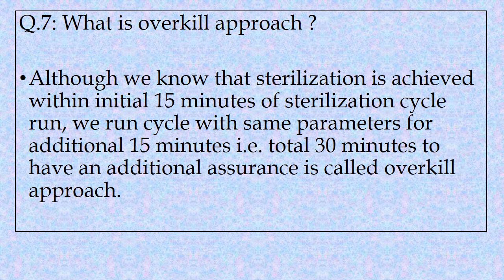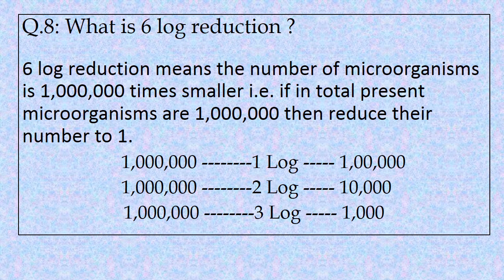Question number seven: What is the overkill approach used in autoclave sterilization? Although sterilization is achieved within the initial 15 minutes of the sterilization cycle, we run the cycle for an additional 15 minutes — that is, a total of 30 minutes — to have additional assurance that all microorganisms have been killed and 6 log reduction has been achieved. Question number eight: What is 6 log reduction? Six log reduction means the number of microorganisms is reduced by 6 log — that is, if 1,000,000 microorganisms are present on a surface and their number is reduced to 1, then it is called 6 log reduction.